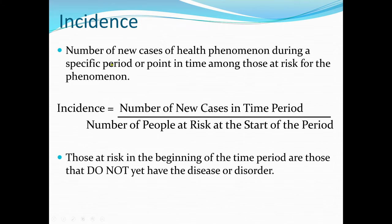Incidence is normally the number of new cases of a health phenomenon during a specific period or point in time among those at risk for the phenomenon. To find the incidence, it is the number of new cases in a time period divided by the number of people at risk at the start of the period. Incidence is very difficult to measure because we have to understand what constitutes a new case. For example, with HIV in a community, we need to define whether a case from the past two weeks, six months, or a year counts as new — the time period is very important.